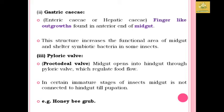The gastric caeca are finger-like outgrowths found at the anterior end of the midgut. They increase the functional area of the midgut and shelter symbiotic bacteria in some insects. The pyloric valve, also known as the proctodeal valve, regulates food flow from the midgut into the hindgut. In certain immature stages of insects, the midgut is not connected to the hindgut until pupation — for example, in honeybee grubs.